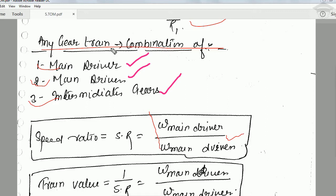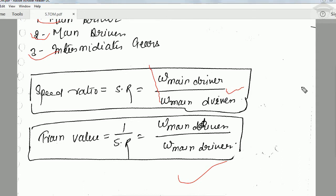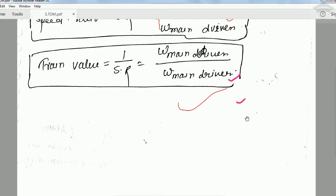The main driver gear is the one to which we supply the input power. The intermediate gears transfer the power from the main driver gear to the main driven gear. When the power reaches the last gear, that is known as the main driven gear. There are two terms: speed ratio, which is the ratio of the angular velocity of the main driver upon the main driven (omega_driver / omega_driven), and train value, which is one upon the speed ratio, i.e., omega_driven / omega_driver.